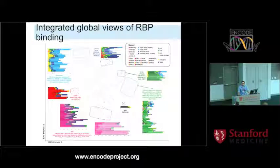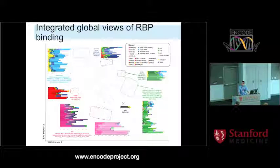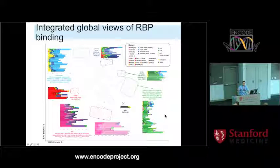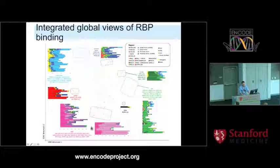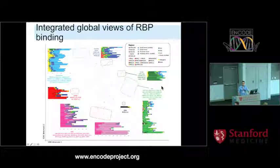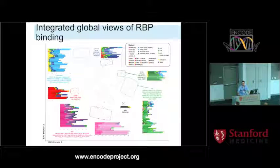Finally, we can ask very global questions about RBP binding - for example, clustering all datasets by what types of RNAs they bind. We very quickly pull out clusters of ribosomal RNA binders, intronic binders, 3'UTR binders, et cetera. So we can start to infer what an RBP is doing based on both specific and general properties of its binding profiles.